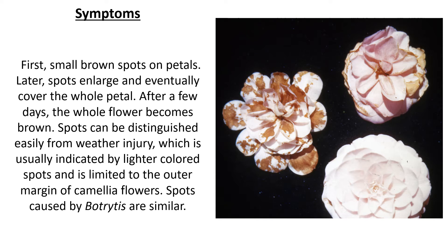The symptoms first appear as small brown spots on petals; later the spots enlarge and eventually cover the whole petal. After a few days, the whole flower becomes brown. The spots can be distinguished from weather injury, which is usually indicated by lighter colored spots limited to the outer margin of the camellia flowers.